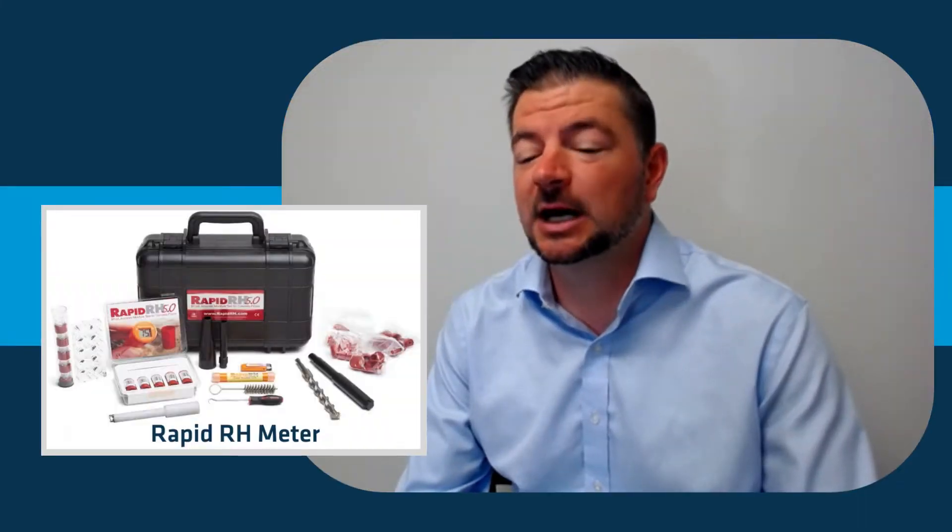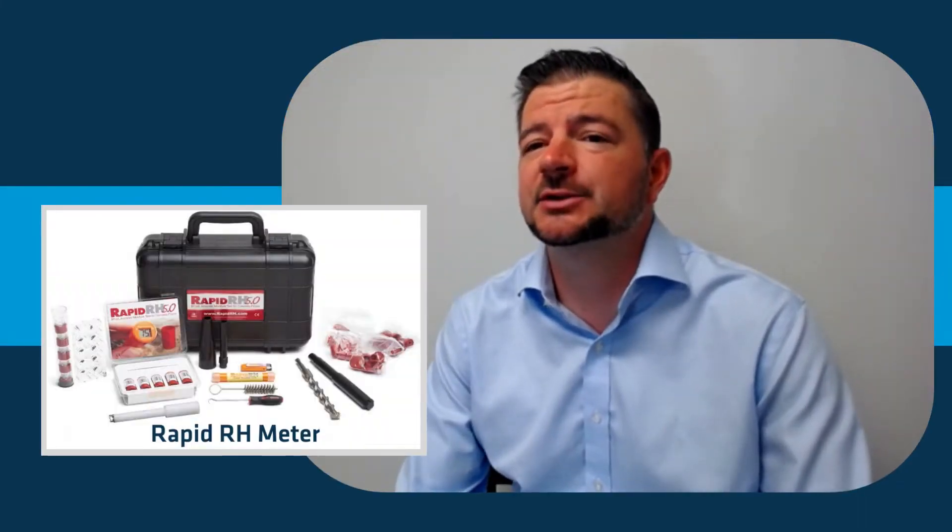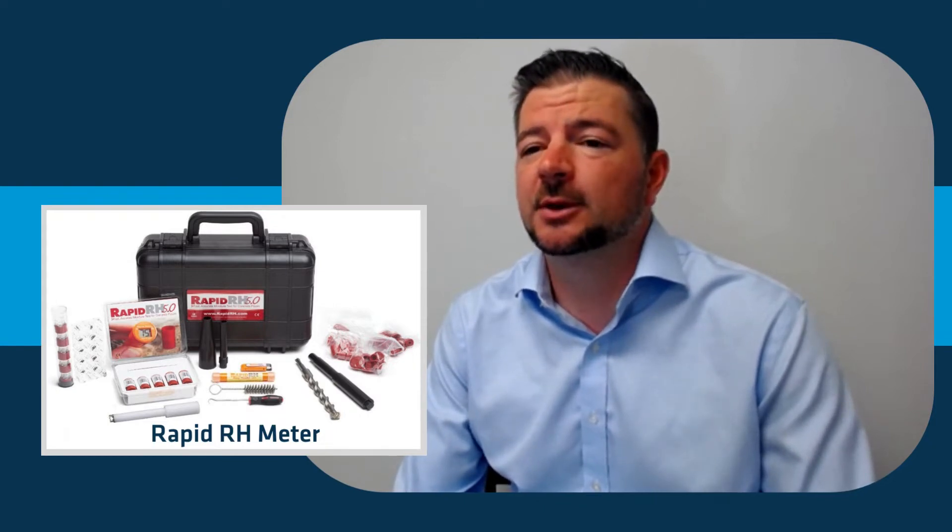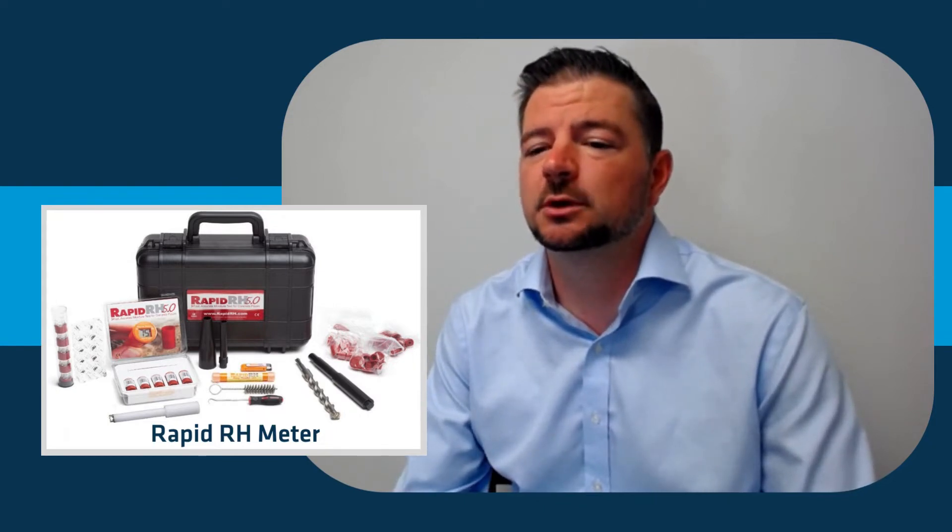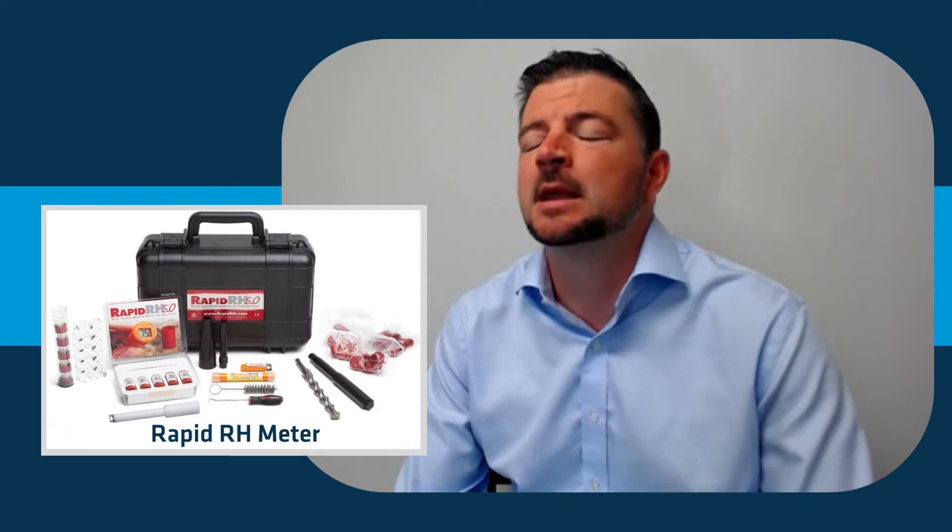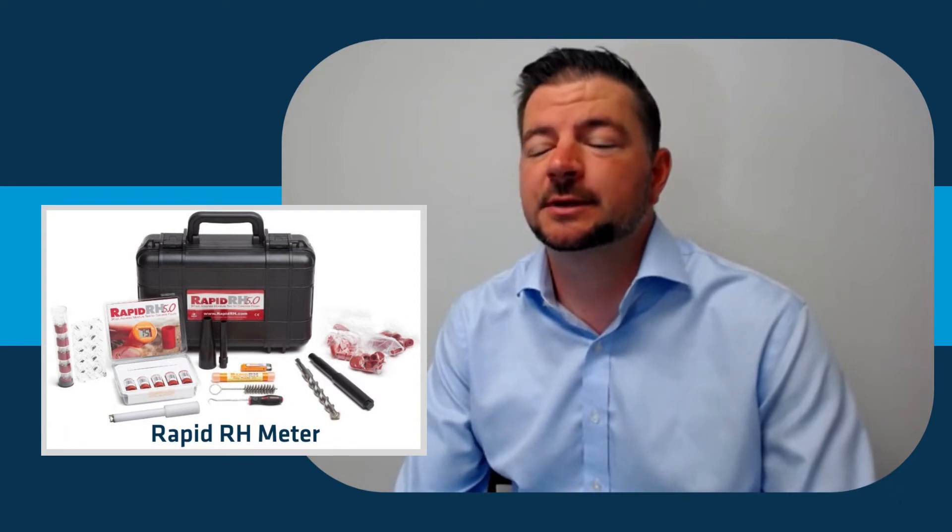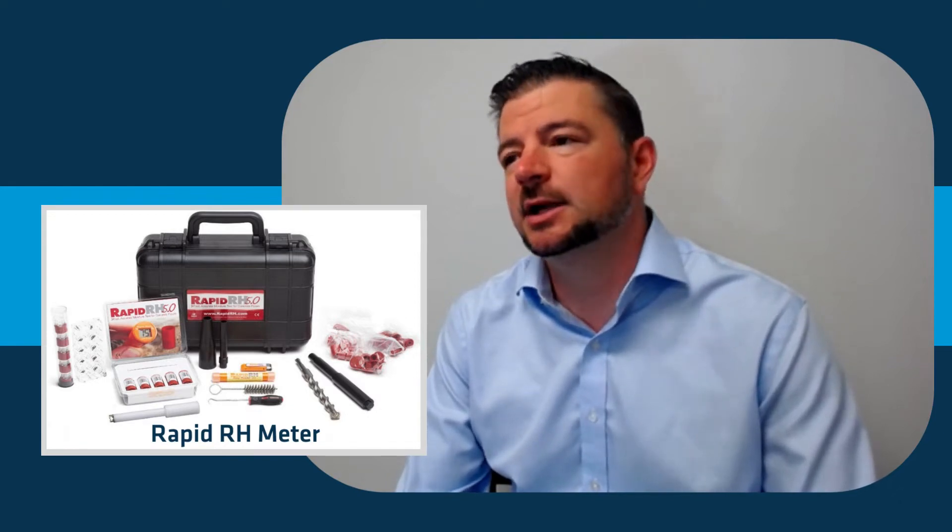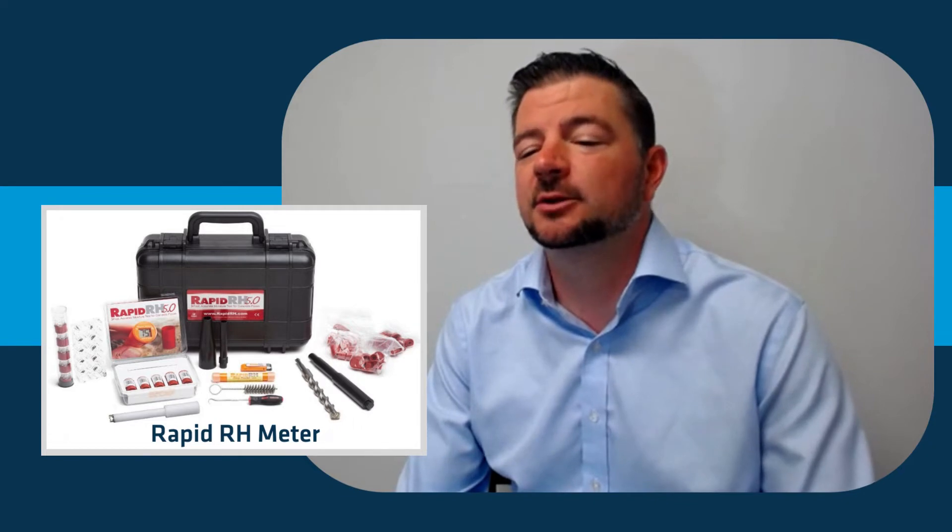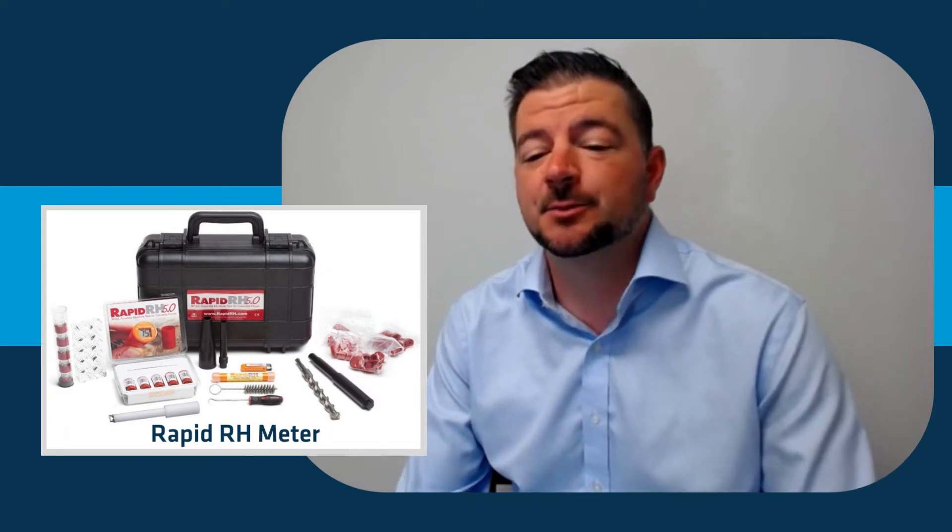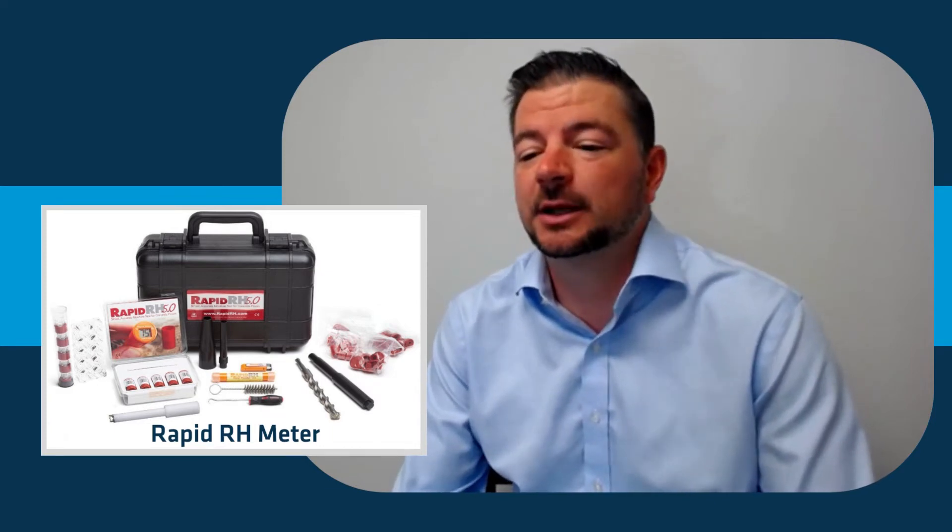The more common one we use now is called a rapid RH meter. Basically, you drill into the concrete 40 percent of the depth, put a probe in there, let it sit for 24 hours, then come back and stick your reader in. It will give you both the relative humidity—how much moisture is in the concrete—as well as the temperature. That's, in our opinion, a more accurate and easier way of getting moisture readings.